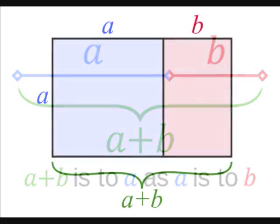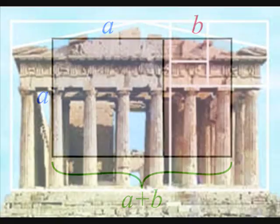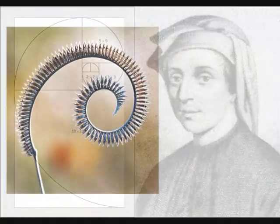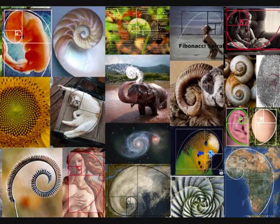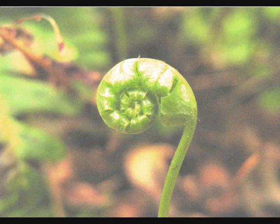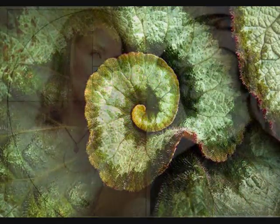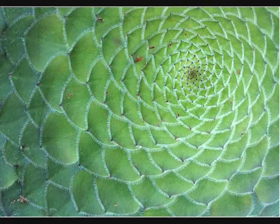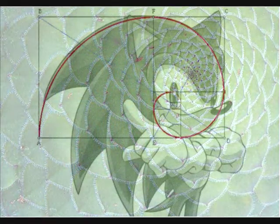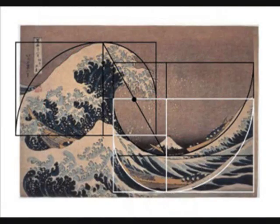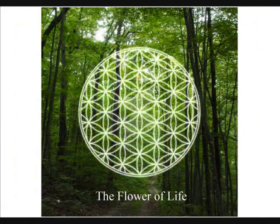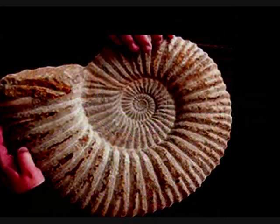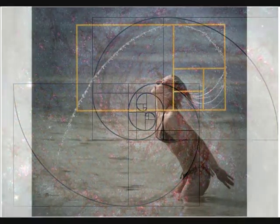The golden ratio can be found almost everywhere, and it has been said that it represents a universal law in which is contained the ground principle of all formative striving for beauty and completeness in the realms of both nature and art, and which permeates as a paramount spiritual ideal all structures, forms, and proportions, whether cosmic or individual, organic or inorganic.